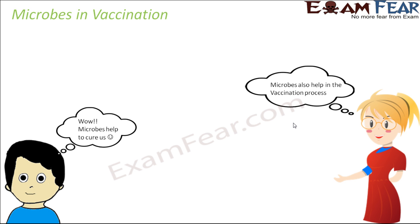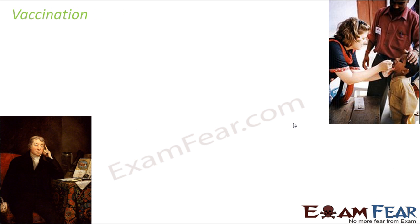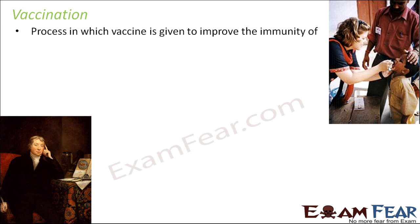Like how we studied about antibiotics, we are now going to talk about the vaccination process. In antibiotics, they cure a disease, and in vaccination, they also prevent a disease. Vaccination is a process in which a vaccine is given to improve the immunity of the body against a specific disease.